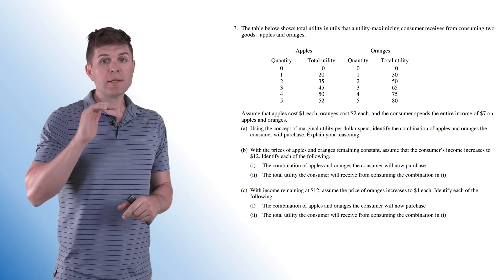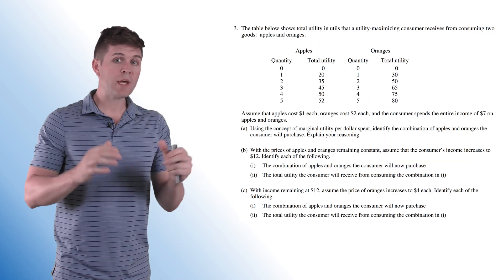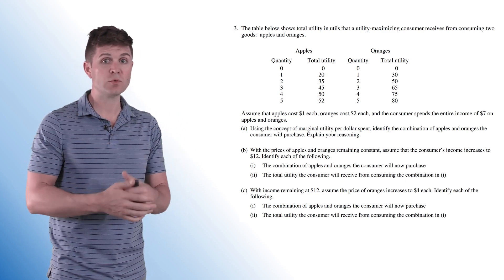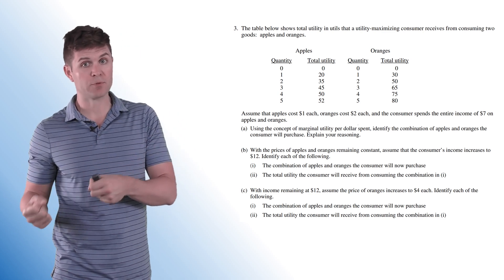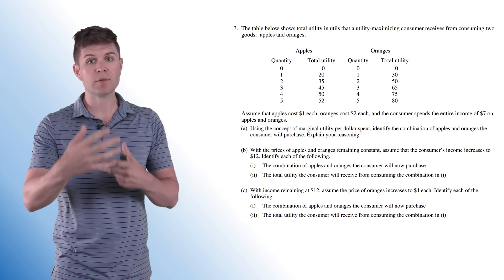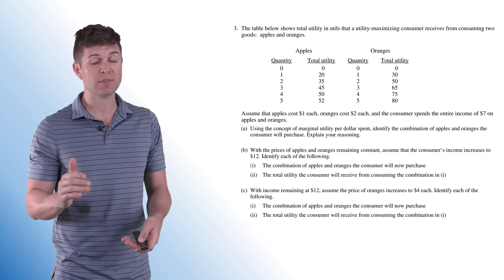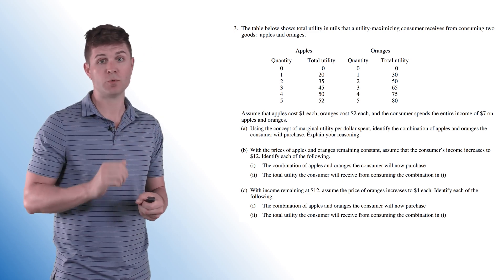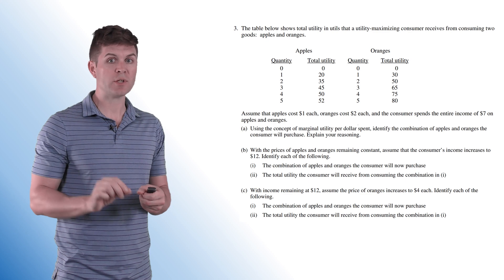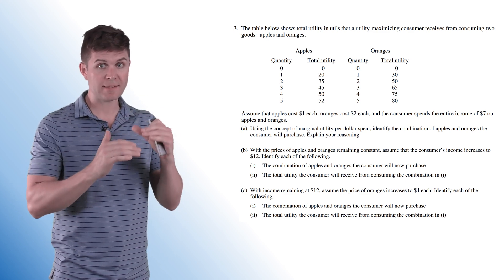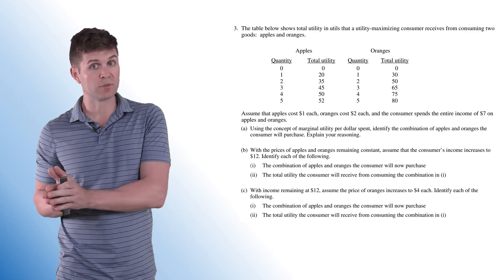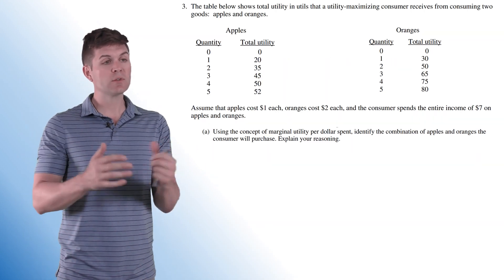In this question we are given two tables of information about utility that a consumer is going to receive from consuming apples and oranges. And then there's going to be a variety of different questions asked about these tables. So make sure you know what these tables are giving us. In this case, it's giving us total utility. It's very important to differentiate between marginal. If you mistake that or make an assumption on that, it's going to cause vast consequences towards the end. So let's get through this question.